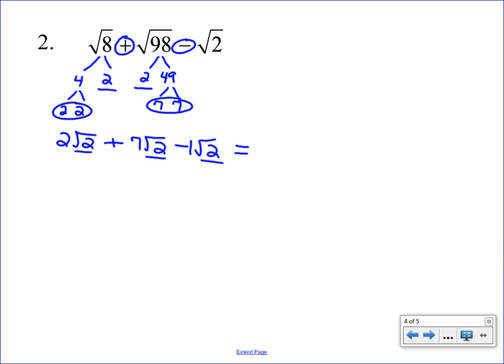So it's like we have two square roots of two plus seven square roots of two, which would give us nine square roots of two. But then we have to take one away. So we end up with eight square root of two. And that would be your final answer.